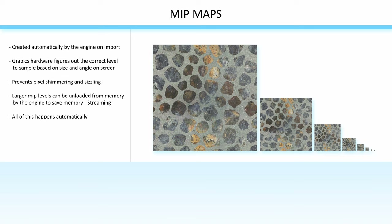When your shader asks for a sample of the texture, the graphics hardware figures out which of the mip levels to sample based on several factors, including how big the texture is on the screen and what the angle is between the polygon and the camera. For example, if the texture were about this big on the screen, it would sample the highest level mipmap. But if the object were further away and the texture needed to be smaller, it might sample one of the mipmaps way down at the end of the chain.